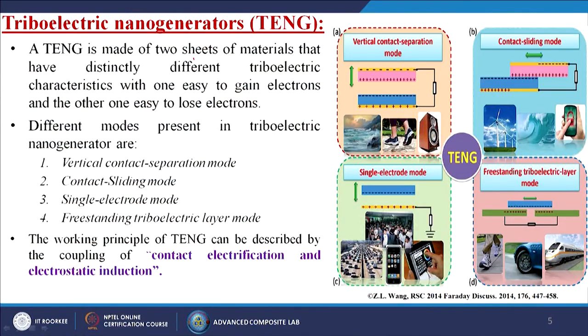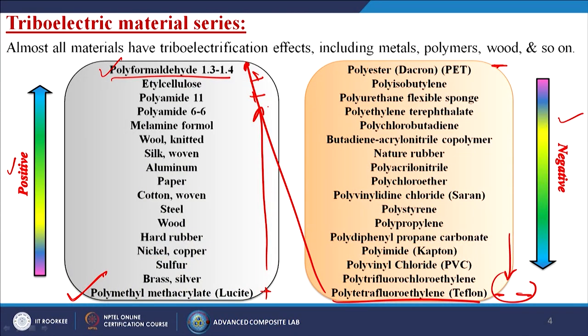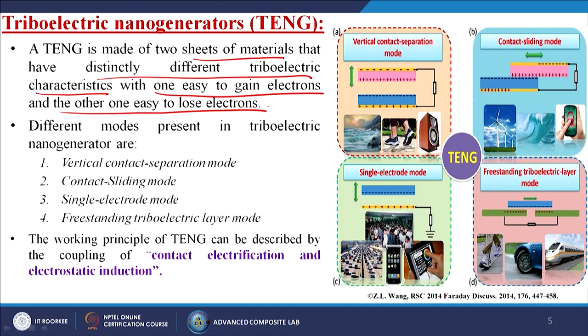Now let us discuss about triboelectric nanogenerators — in short form, sometimes called TENG. A TENG is made of two sheets of materials that have distinctly different triboelectric characteristics, with one easy to gain electrons and the other easy to lose electrons. You can select these materials from the triboelectric series table. There are different modes available to generate electricity: the vertical contact-separation mode, the contact sliding mode, the single electrode mode, and the freestanding triboelectric layer mode.